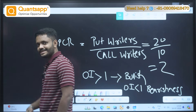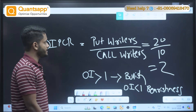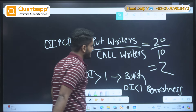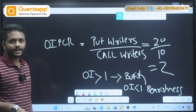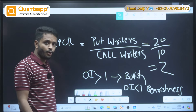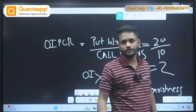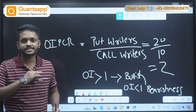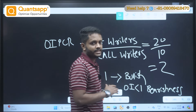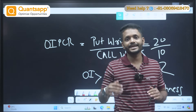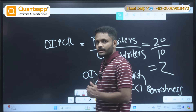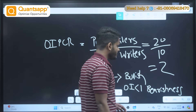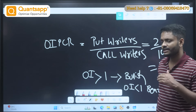Whenever OI PCR is less than 1, it is an indication of bearishness. If put writers are 20 and call writers are 10, that means put writers are more. When more people have started writing puts, the support is strong enough — there is a possibility the stock might not come down and there could be an upside move from there. So whenever you talk about OI PCR, we see it from a writer's perspective.